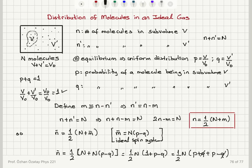This problem has shown that by taking the ideal spin system as a model, I can solve similar problems knowing the solution to that problem. We considered the distribution of molecules in an ideal gas at equilibrium. We had a total volume V0 of an isolated container, a sub-volume V with N molecules inside, sub-volume V' with N' molecules inside, and the total number of molecules capital N. At equilibrium with the uniform distribution, the probability of a molecule being in sub-volume V is simply the ratio of that volume to the total volume. By defining M as the difference between the number of molecules in V and V', I formed the connection between the total moment number in the ideal spin system and this problem.